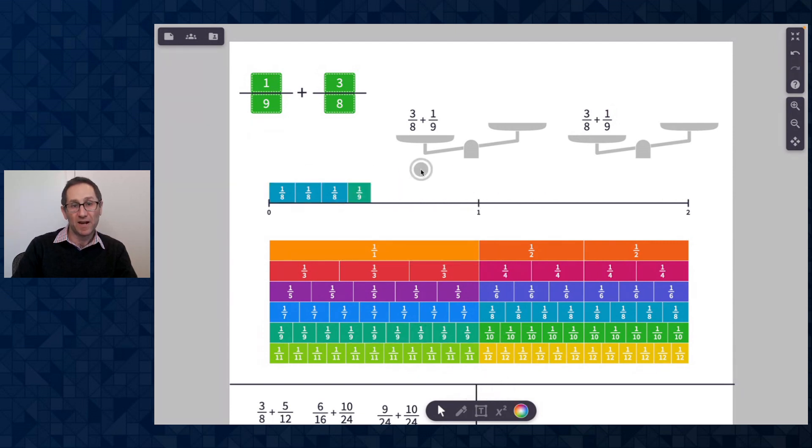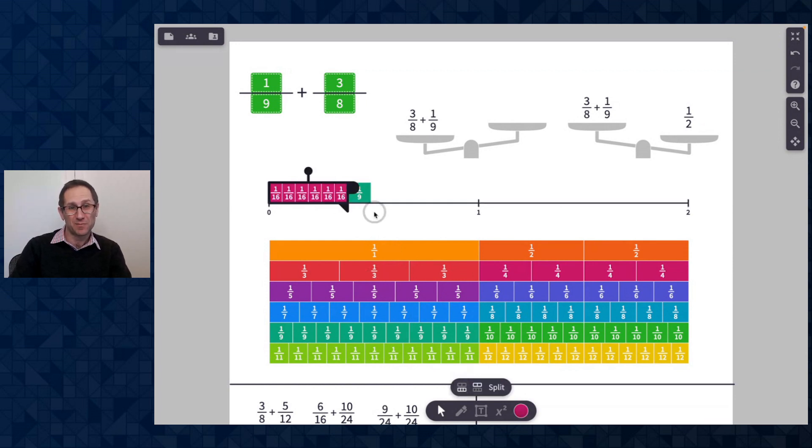So here is three eighths and a ninth. And again, I can make an estimate. Maybe that's a half. Let's see how that compares to a half. Oh, a half was too big. So the answer is slightly below a half.